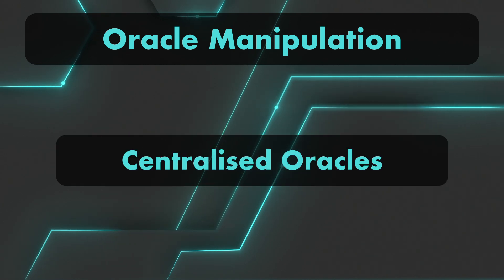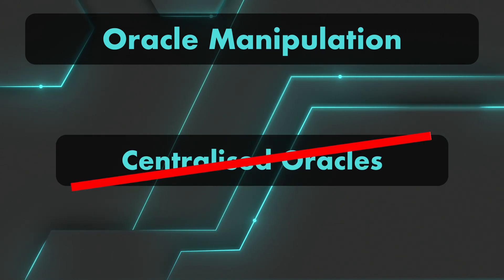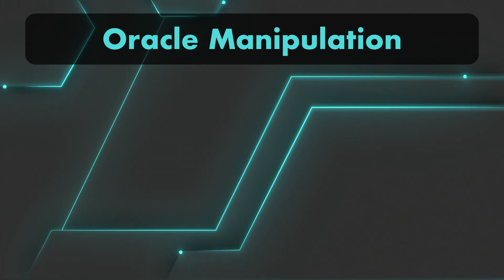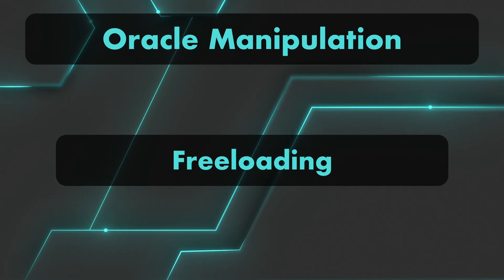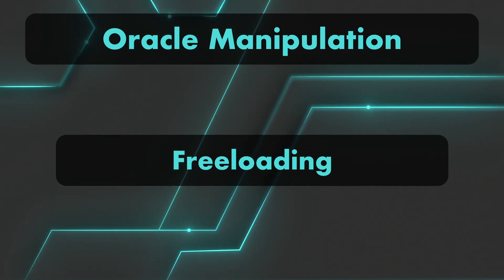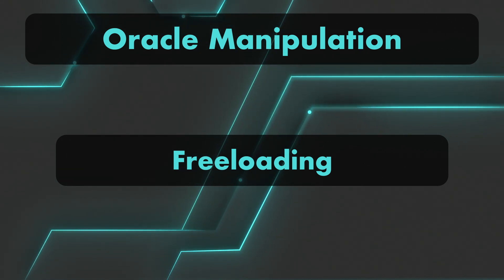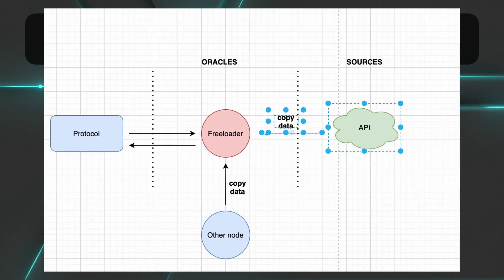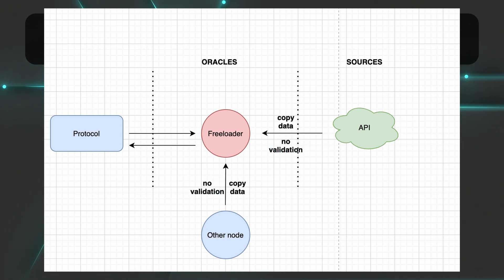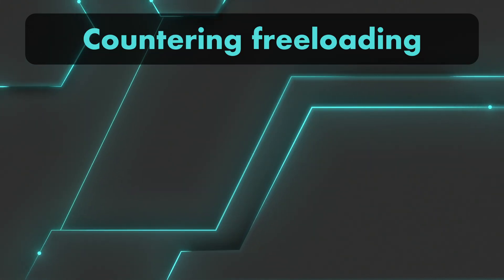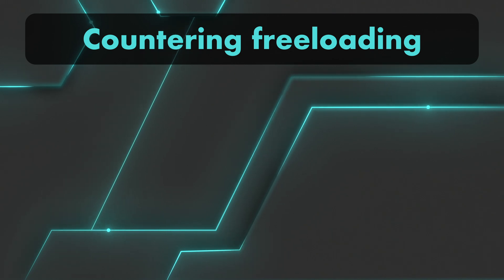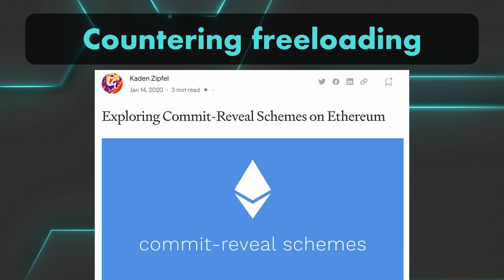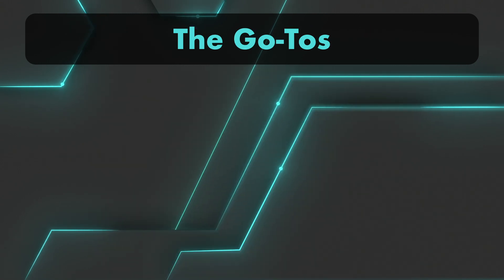We're not going to cover centralized oracles, which is obviously a bad idea since you put your trust in a single entity. But decentralized oracles can also face issues such as freeloading. In a freeloading attack, to save work and maximize profit, an oracle node can leverage another oracle or off-chain component such as an API and simply copy values without validation. One way to counter freeloading is to implement a commit-reveal scheme, which prevents oracle participants from peeking into each other's data.